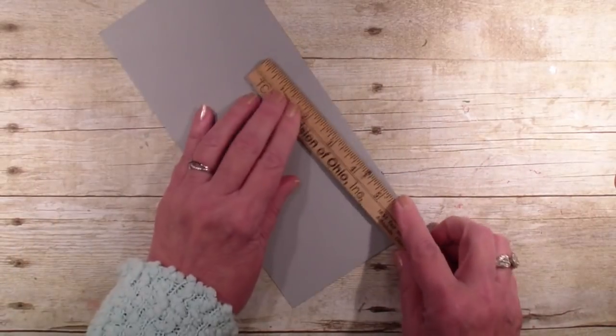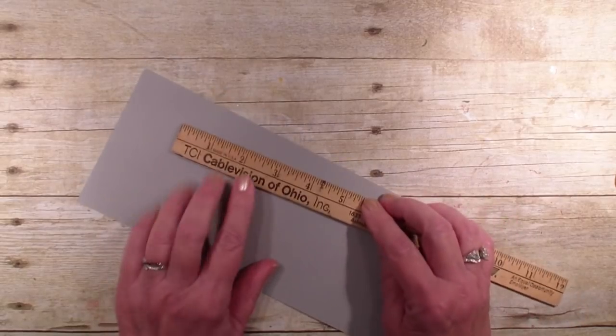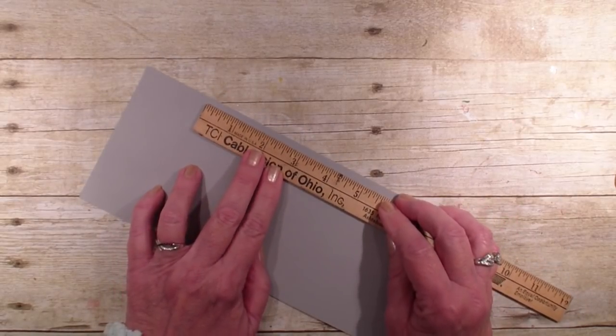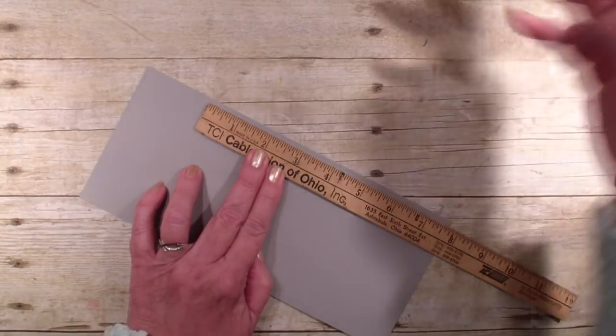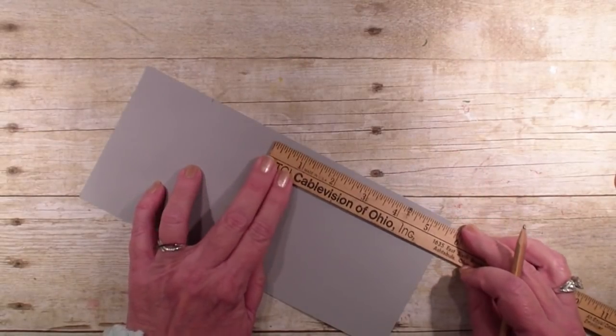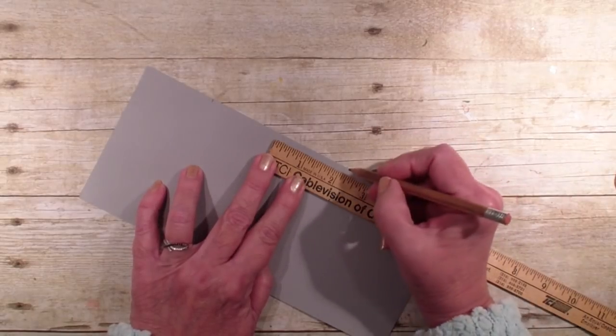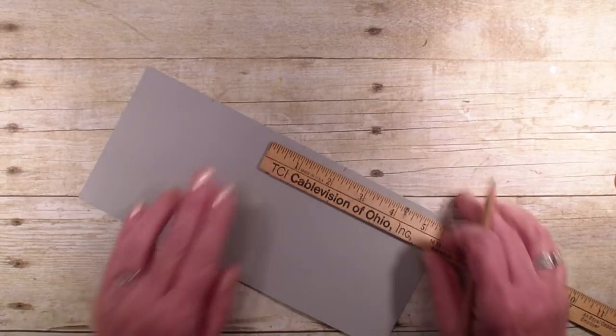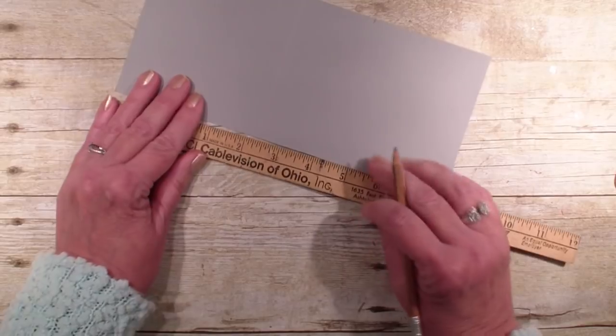I am going to make a pencil mark at two and an eighth on all four sides. So I'm going to come down here and do two and an eighth and then two and an eighth over here.